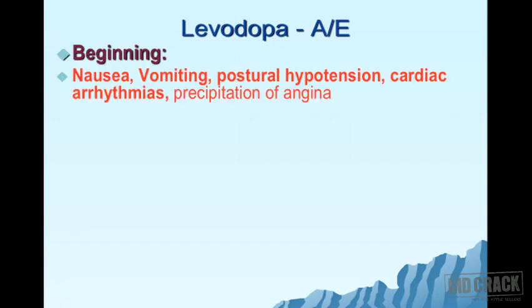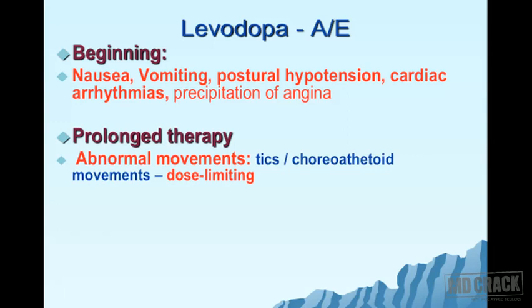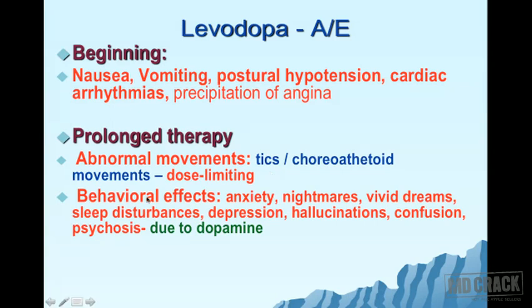Adverse effects of levodopa: early adverse effects include nausea and vomiting, postural hypotension, cardiac arrhythmias, and precipitation of angina. On prolonged therapy, abnormal involuntary movements appear — dose-limiting movements in the form of tics or choreoathetoid movements. Behavioral effects include anxiety, nightmares, vivid dreams, sleep disturbances, depression, hallucinations, confusion, and psychosis — all due to dopamine formed centrally.